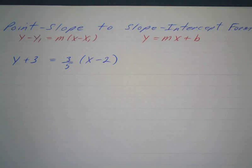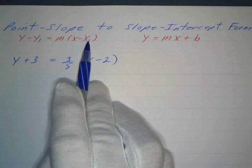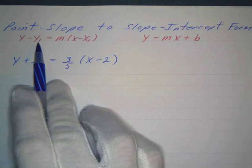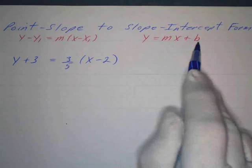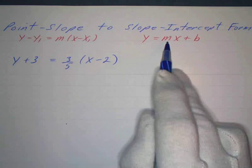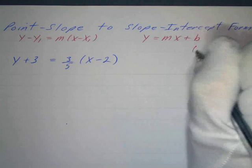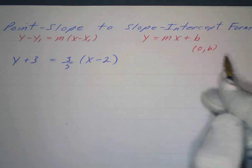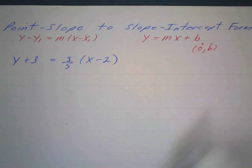So first one we're going to talk about is going from point-slope to slope-intercept form. Remember the point-slope form is y minus y1 equals m times x minus x1, where m is a slope and x1, y1 is a point, and we want to change that to the slope-intercept form. That's y equals mx plus b, where m is the slope and b is the intercept. Remember that means that the point (0,b) is on the graph. This is called the y-intercept because this is where it crosses the y-axis. So when x is 0, y is b.